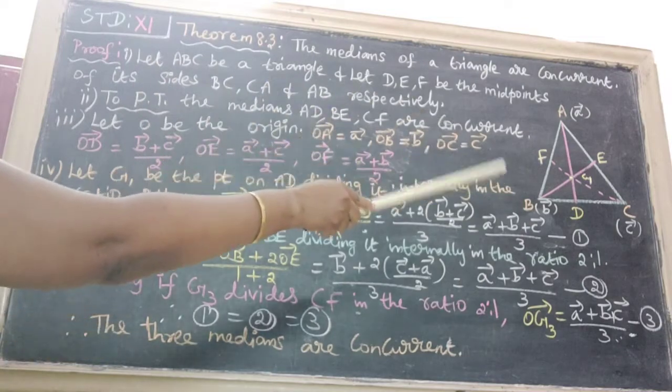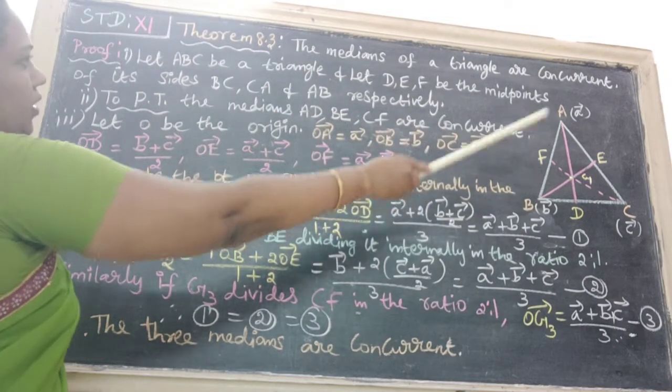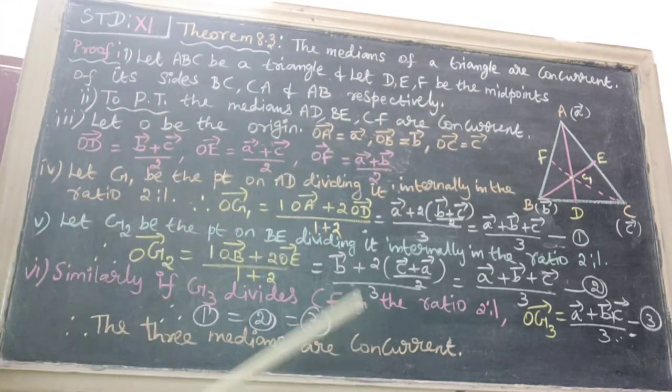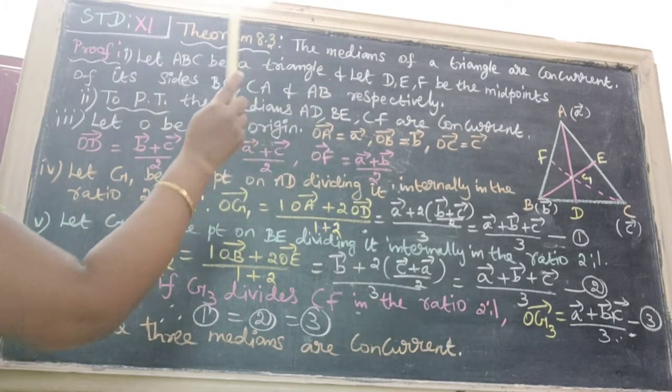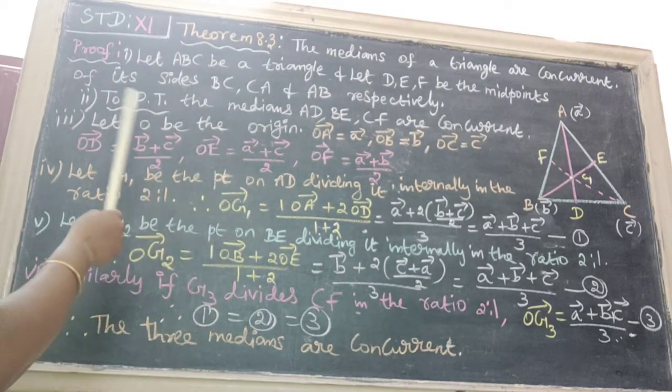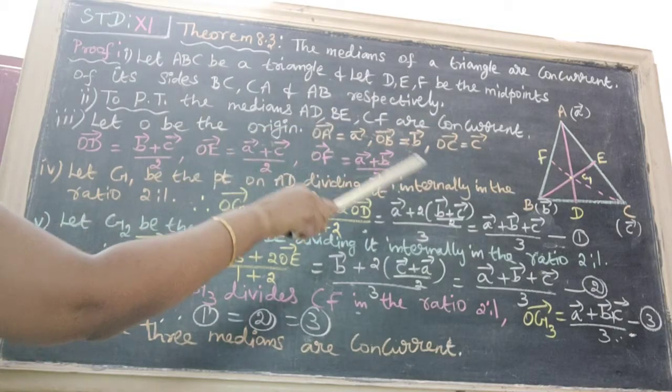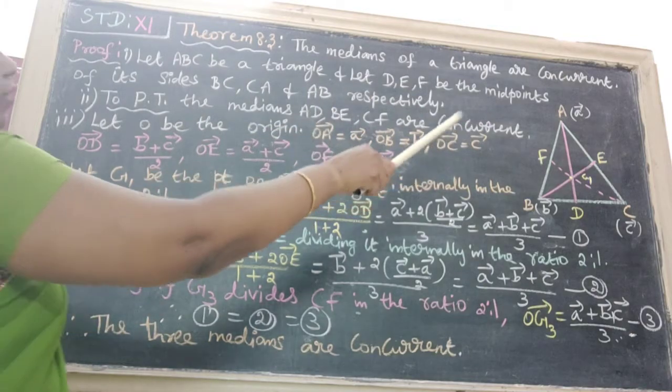Let ABC be a triangle. And let D, E, F be the midpoints of its sides BC, CA and AB respectively. To prove that the medians AD, BE, CF are concurrent.